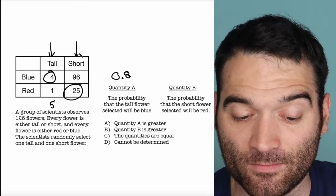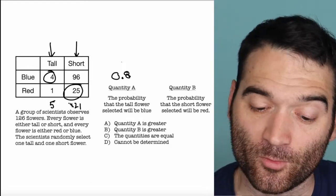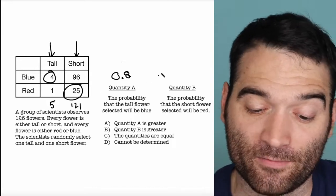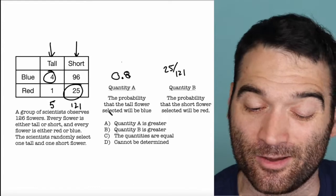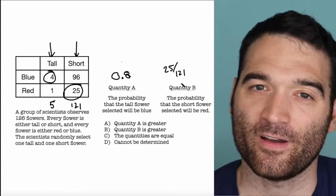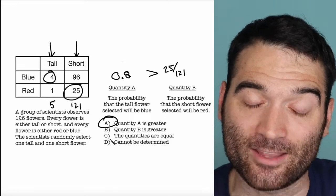Well, if I go to this column now, I have 121 flowers, and 25 of them are red. So what's the probability that I'm going to pick a red flower? Well, it's 25 out of 121, which is a little less than 25%, or way less than 25%. So clearly, quantity A is going to be greater here.